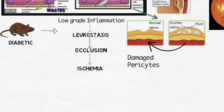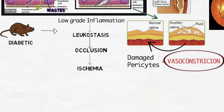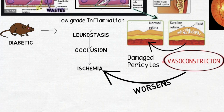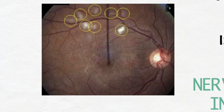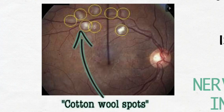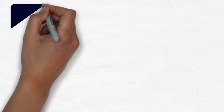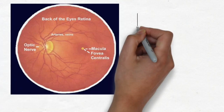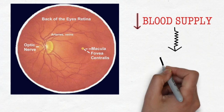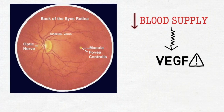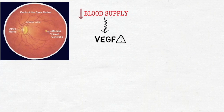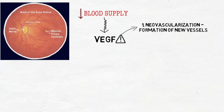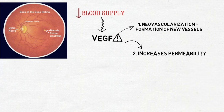Additionally, damaged pericytes cause vasoconstriction, which further contributes to occlusion and decreased perfusion. Because of this, nerve endings tend to infarct and appear as fluffy white patches called cotton wool spots. The retina, being highly vascular, releases a molecule called VEGF to counter this hypoperfusion. VEGF is the key factor in progression from non-proliferative to proliferative diabetic retinopathy — it promotes formation of new vessels and increases permeability.